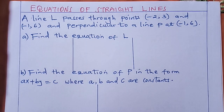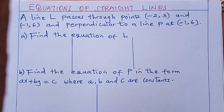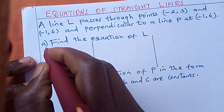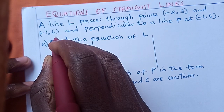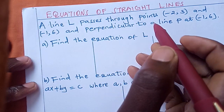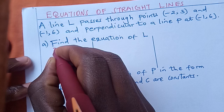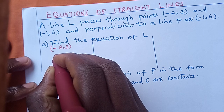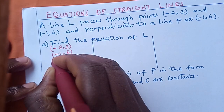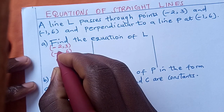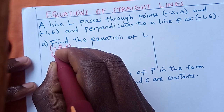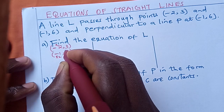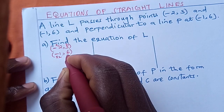Without wasting time, we need to remember that the first thing we need here are the points. Line L is passing through a point. The first point is (-2, 3) and the next point is (-1, 6). These are the coordinates: x1 = -2, x2 = -1, y1 = 3, and y2 = 6.